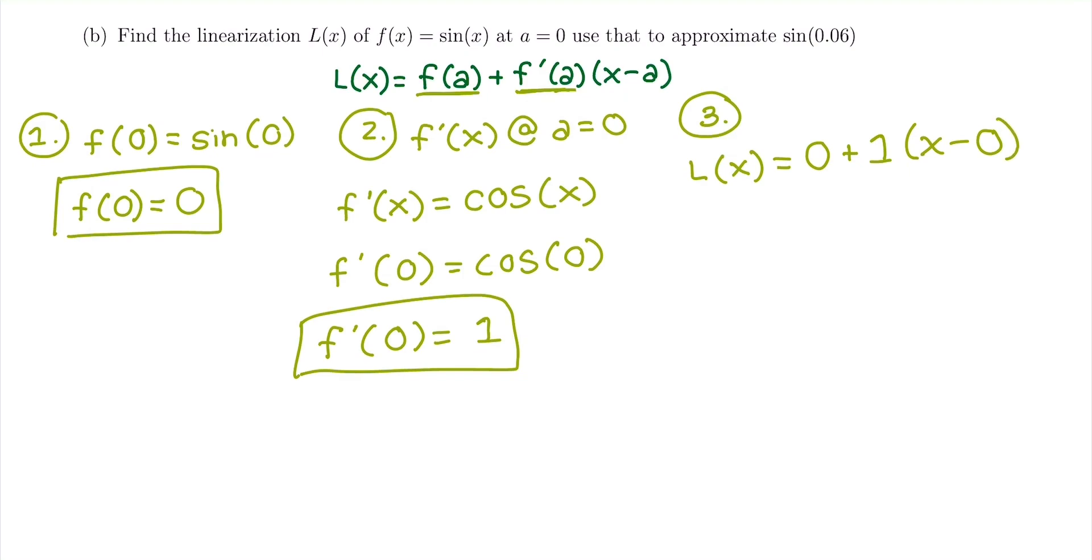So normally it is totally fine to just leave it in that form. This one, it might make sense to simplify it or multiply things out. So this is going to be 0 plus 1 times x minus 0. This is all just going to simplify to be 1x. So this will approximate for any x value near 0.